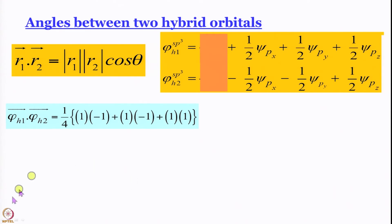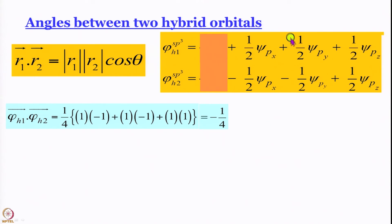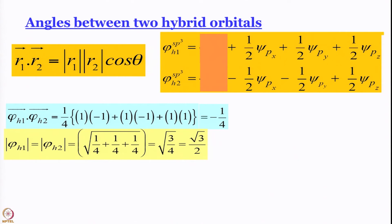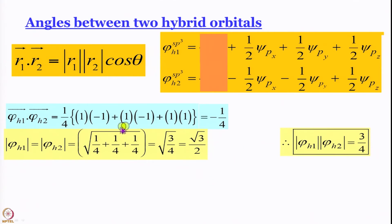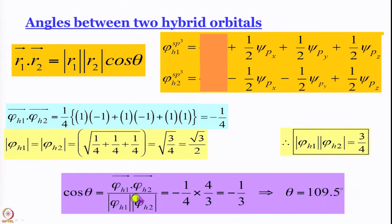The magnitude of each hybrid vector (ignoring s) is √(½² + ½² + ½²) = √(3/4) = √3/2. The product of magnitudes is 3/4. Therefore cos θ = (−1/4)/(3/4) = −1/3. Taking cos⁻¹(−1/3) gives θ = 109.5 degrees. This confirms we have an actual tetrahedron, consistent with minimizing repulsion between bond pairs.